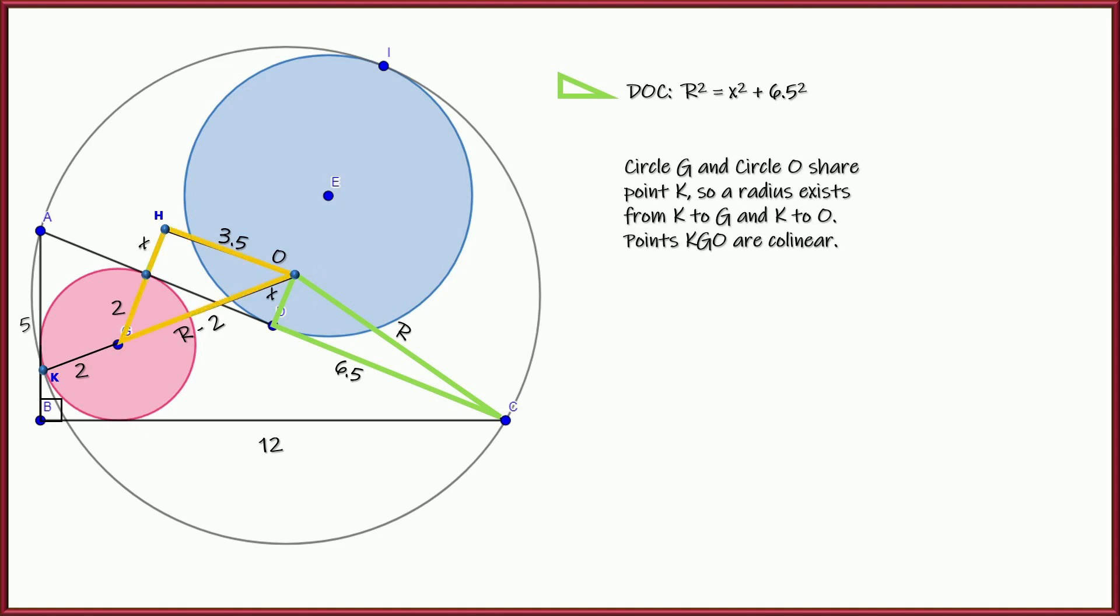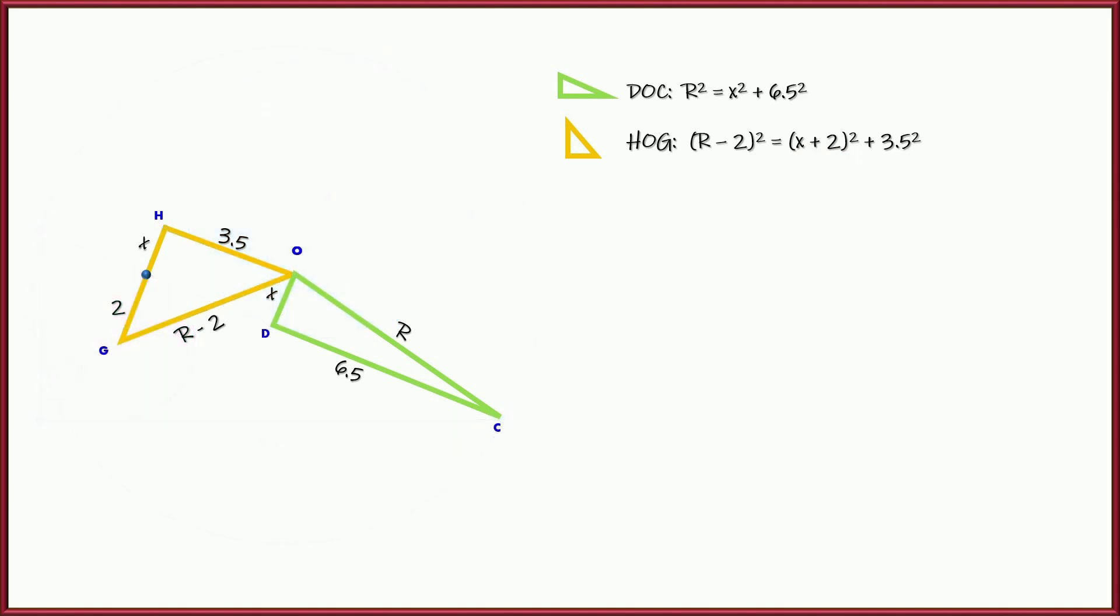Now, let's go ahead and highlight what that triangle looks like. That is triangle HGO, or HOG, and using the Pythagorean theorem, we've got R minus 2 squared equals X plus 2 squared plus 3.5 squared. Let's go ahead and clean up our picture so you can see those two, and let's go ahead and take those two triangles out of context so you can really see what they look like. So these are the two triangles we're going to relate. We're going to see if we can figure out an expression for R and X that we can use here in just a little bit.